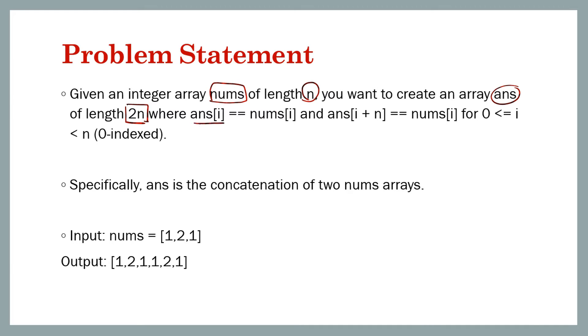So till n, 0 to n minus 1, it will be the same in both arrays. This is nums and this is the answer, which is twice the length.